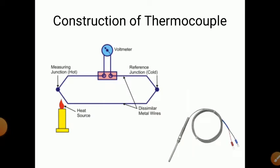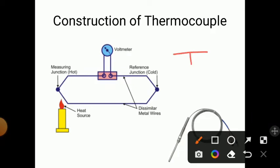First, you should understand what a thermocouple is. A thermocouple is made up of two dissimilar metal wires connected together such that they form two junctions. One junction is called the hot junction and the second is called the cold junction. The hot junction is where we are going to measure the reading — it is also called the measuring junction. It works on the principle that as a temperature difference occurs between both junctions, a voltage is induced in the circuit.